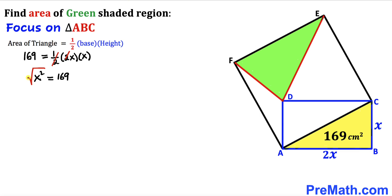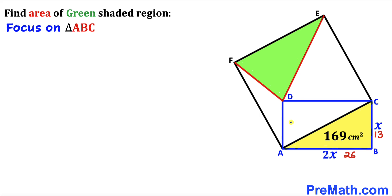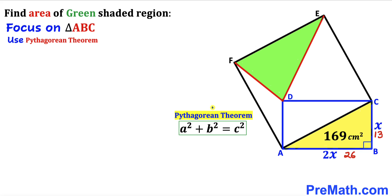Taking the square root of both sides, x equals positive 13 centimeters. So 2x equals 26. Now let's focus on the yellow triangle ABC again and apply the Pythagorean theorem: a squared plus b squared equals c squared. The diagonal of this triangle is side AC, and the two legs are 13 and 26.